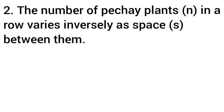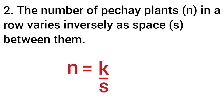For number two, the number of petchay plants n in a row varies inversely as the space s between them. We write it mathematically as n equals k over s, where k is the constant of variation and s is the space between them.